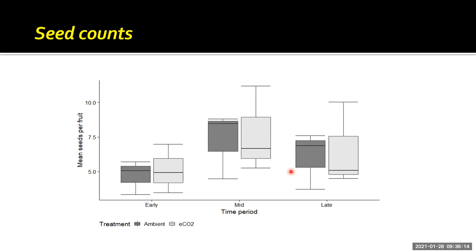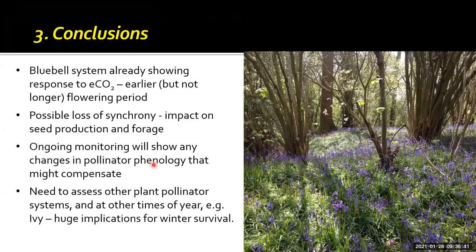Finally, for the pollinator data, looking at seed counts: these follow the pattern of plant visits by pollinators. But interestingly, the number of seeds produced from those early flowers is quite high — there were almost six times as many pollinator visits in the mid period, but the return from those early flowers actually seemed much better. To conclude this section: bluebell systems are already showing a response to elevated CO2, with an earlier but not extended flowering period. This loss of synchrony may have a significant impact on plant-pollinator interactions and other parts of the system. We'll have ongoing monitoring of the bluebell system, and we also want to look at ivy in particular — an important resource for insects preparing for winter hibernation and diapause.